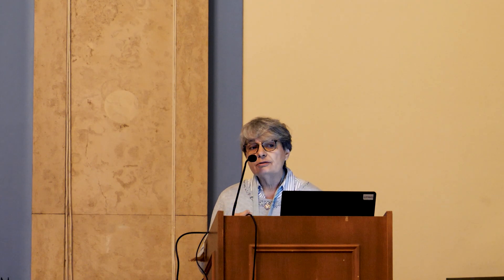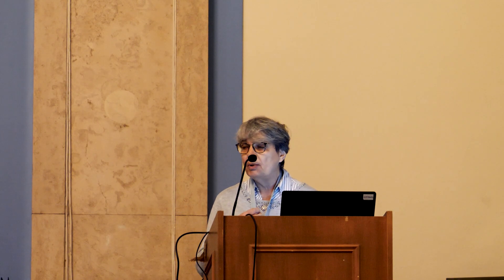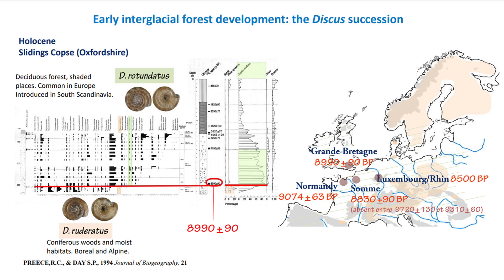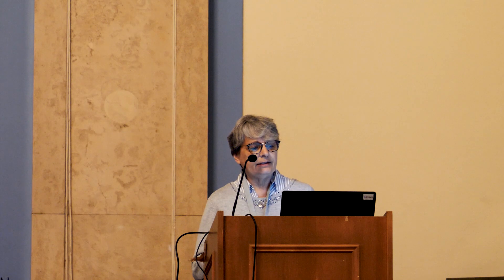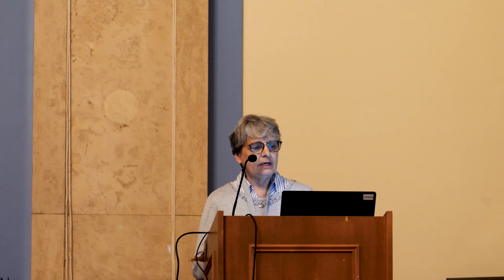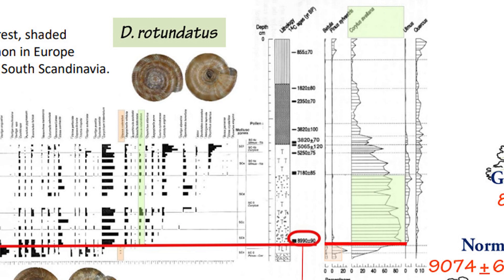The order of appearance of these forest species is important. Among them, particular mention needs to be made of two species belonging to the genus Discus. These are Discus ruderatus, which is the first one, followed by Discus rotundatus at the beginning of the interglacial. This succession was first identified in Holocene sequences. These two species succeed each other in time, and sometimes they are recorded together. When that is the case, ruderatus shows a decline in population while rotundatus is expanding.